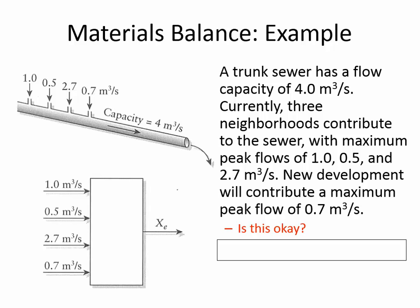The capacity of the pipe is partly due to the roughness — the n value — partly due to the diameter of the pipe, which goes into both the area and the hydraulic radius, and then the slope as well. Once you have the pipe in the ground, you can't change any of those things easily. There's already a flow of one cubic meter per second, another flow of 0.5, and 2.7, and then the new one would contribute a peak flow of 0.7 cubic meters per second. Do a quick analysis — is that going to be okay or not?